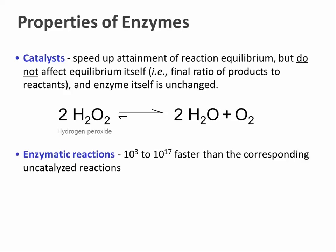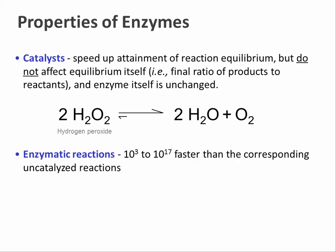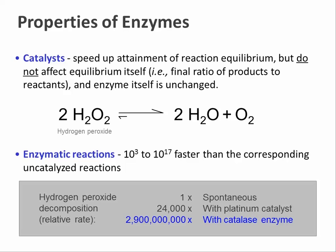Enzymes can speed up the rate of reaction by a factor of between several thousand and millions of billions of times. For the specific example above, the enzyme catalase accelerates the reaction by a factor of about 3 billion. That's far from the most impressive acceleration, but this is only because the reaction does happen spontaneously at some rate. Most reactions catalyzed by enzymes practically do not happen spontaneously at all.